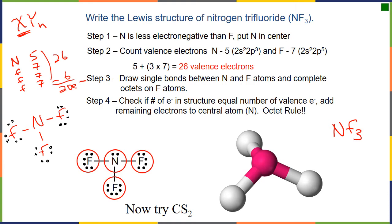After distributing electrons to obey the octet rule on fluorine, we have used 24 electrons, leaving two. The only place the remaining two electrons can fit and still follow the octet rule is on the nitrogen. Now everything sees eight electrons — the octet rule is obeyed — and this is our Lewis structure for NF3.